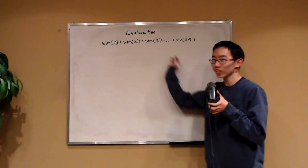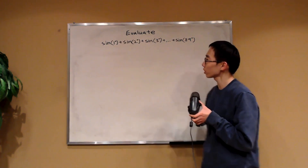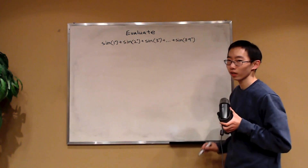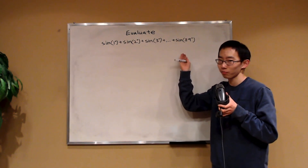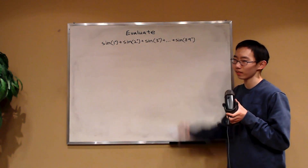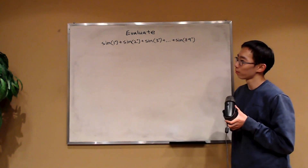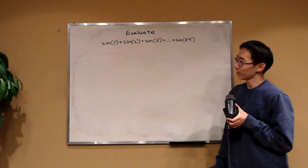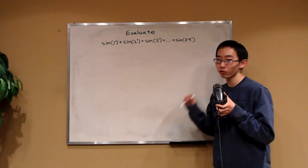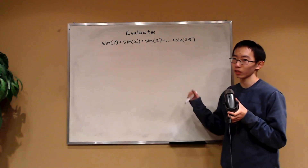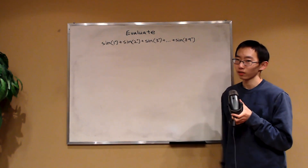I have an announcement to make at the end of this video, but first let's evaluate this sum. We have sine of 1 degree plus sine of 2 degrees plus sine of 3 degrees, all the way until sine of 89 degrees. Can you find a nice closed expression for this sum? Maybe we can use some sort of angle identity, but I want to focus on a solution that involves complex numbers. This complex number method actually helps generalize this sum pretty well.